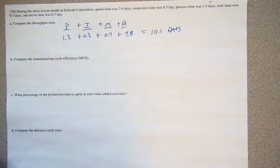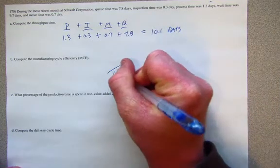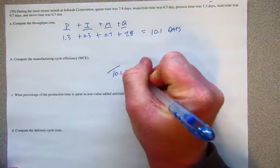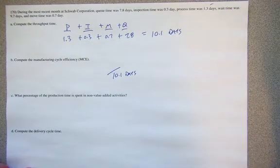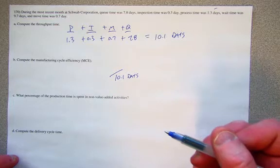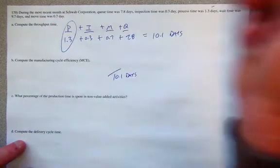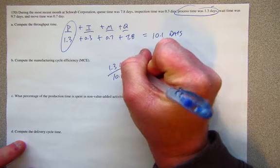Now, the question about manufacturing cycle efficiency is to basically say, how much of that 10.1 days was value added? Okay, so this product spends 10.1 days in throughput. And out of all of that, only processing time of 1.3 days adds value.